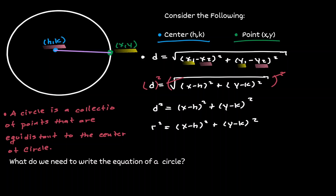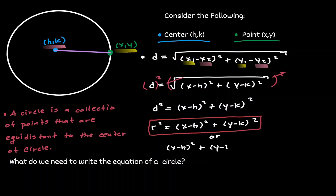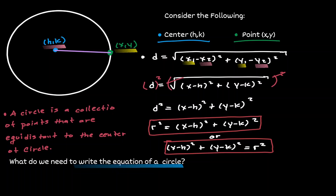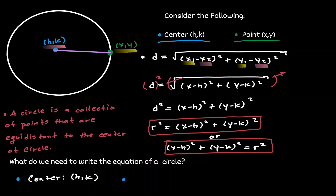And now we have defined the equation of the circle. Another way to rewrite this equation is to place r squared on the right-hand side of the equal sign. Now that we've made sense of the equation of the circle, let's think about what information we need to define the equation of any circle. We need the values of three unknowns: the radius r, and the values of h and k, which represent the center of the circle.